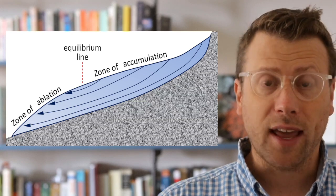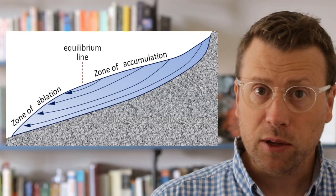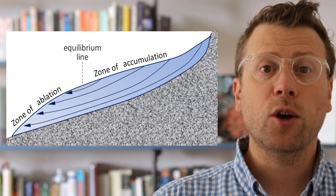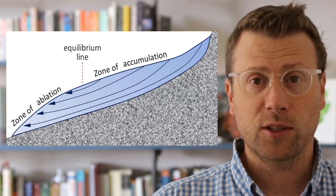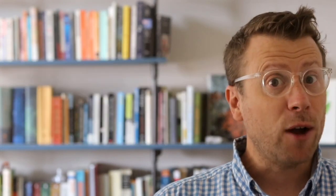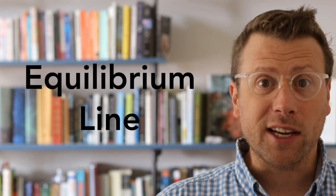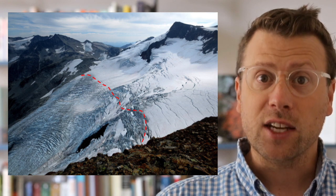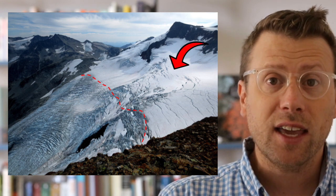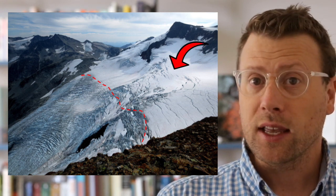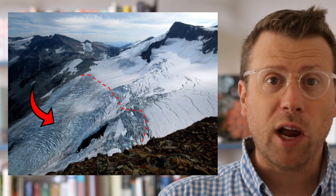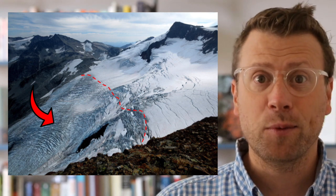All glaciers are divided into two parts: a zone of accumulation at higher elevations where snow builds up and turns to ice, and a zone of ablation at lower elevations where the ice is melting. The boundary between these two zones is called the equilibrium line, and is generally represented by a change in topographic slope — from a scoop-like or concave shape in the zone of accumulation to a rounded and convex shape in the zone of ablation.